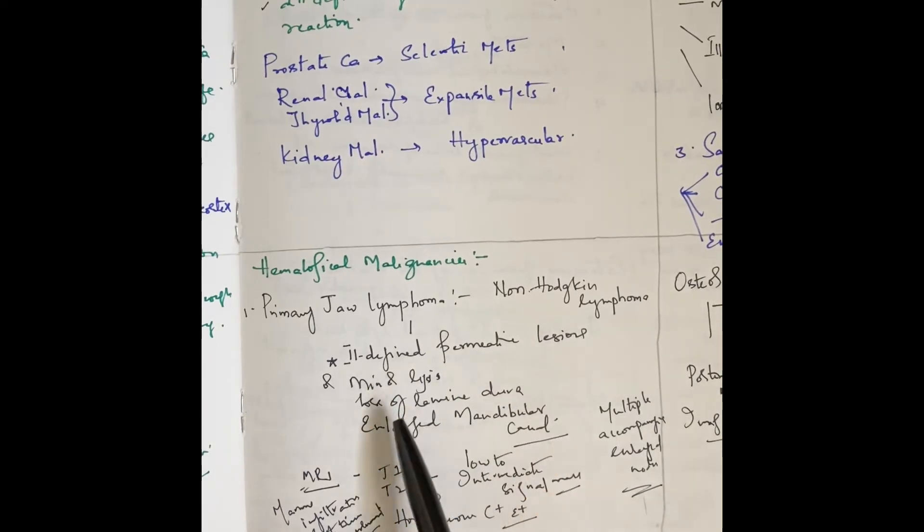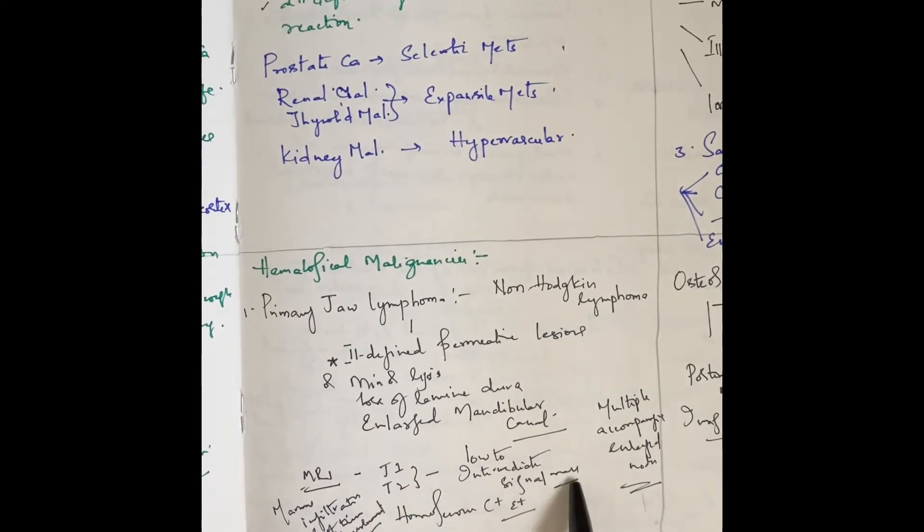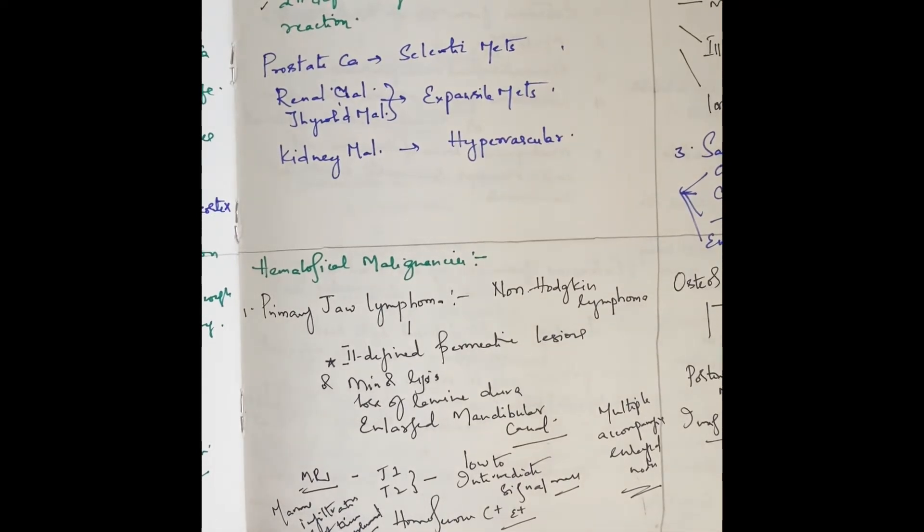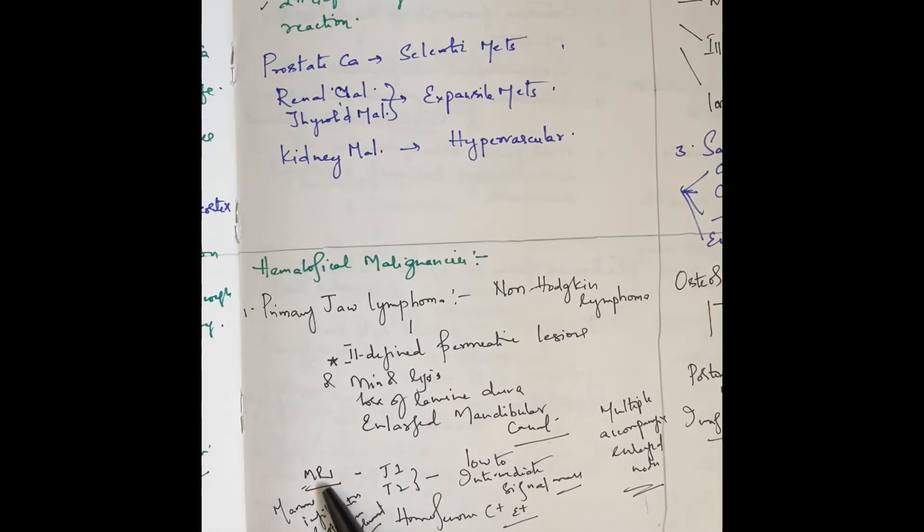For hematological malignancy, primary jaw lymphoma is mainly non-Hodgkin's lymphoma. It presents as ill-defined permeative lesions or moth-eaten lysis, loss of lamina dura, and enlargement of the mandibular canal. On T1 and T2 there will be low to intermediate signal, homogeneous contrast enhancement, and marrow and soft tissue infiltration are seen clearly on MRI. There will also be multiple accompanying enlarged lymph nodes.